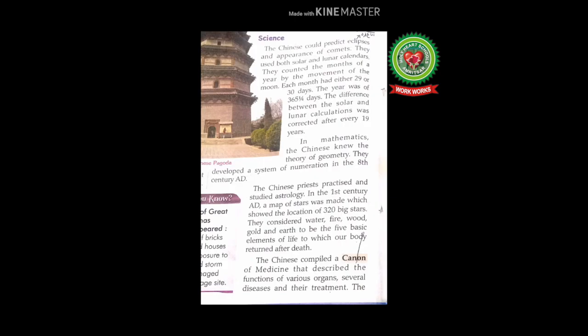The Chinese counted the months of a year by the movement of the moon; each month had 29 or 30 days, and in a year there were 365 and one-fourth days. The difference between solar and lunar calculations was corrected after every 19 years. In mathematics, the Chinese knew the theory of geometry and developed a system of numeration in the 8th century AD.